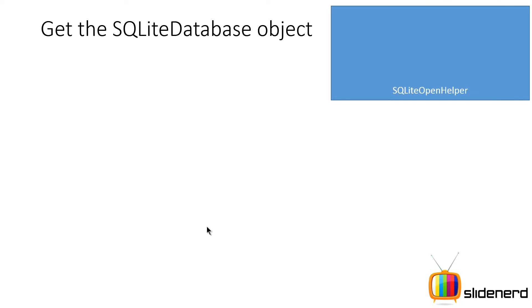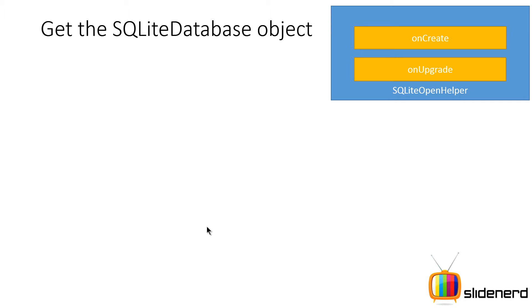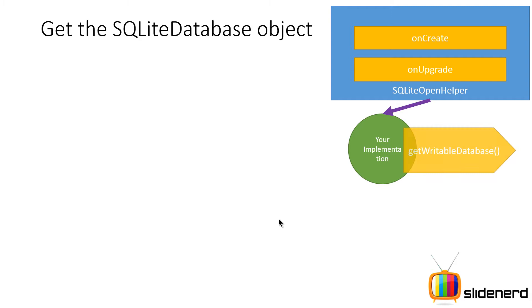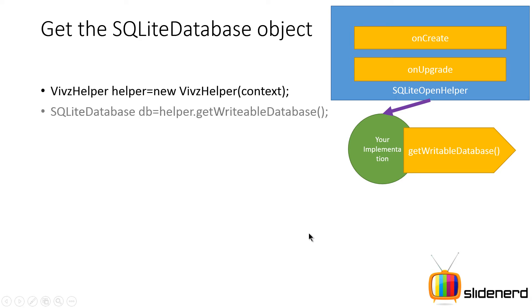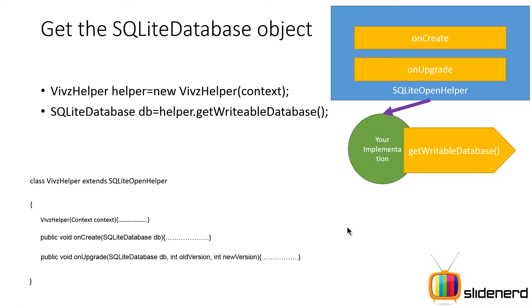Let's take a look at what we did previously. We had our SQLite open helper class with the onCreate method where you write code to create the database or table, and the onUpgrade method where you write code to change the database if its structure changes. Your implementation extends SQLiteOpenHelper, and when someone calls the getWritableDatabase method on your implementation object, you get an SQLiteDatabase object representing the actual database on your physical device.